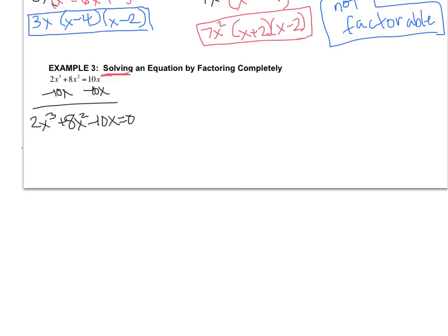What do you always check for? Good, GCF. So GCF here is going to be 2x. So I've got 2x times x squared plus 4x minus 5. Don't forget, equals 0. All right, I'm just going to write it up here because I'm running out of space. Plus, whoops, minus 5 equals 0.